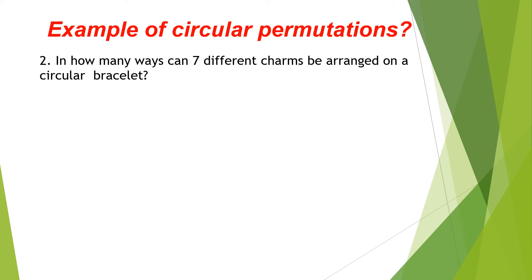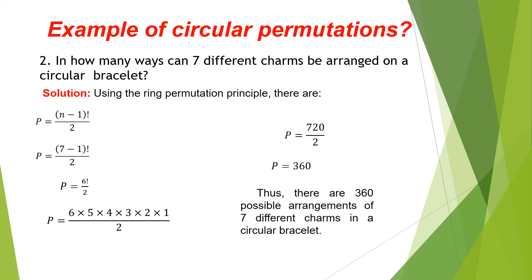Another example for Circular Permutations: In how many ways can 7 different charms be arranged on a circular bracelet? Solution: using the ring permutation principle, the formula is P equals (n minus 1) factorial over 2. Substituting the value for n, which is 7: P equals (7 minus 1) factorial over 2.